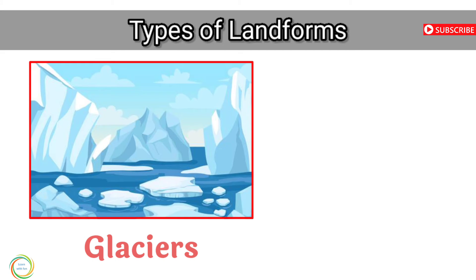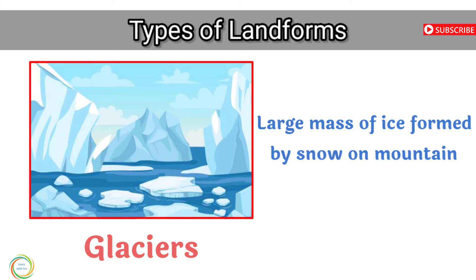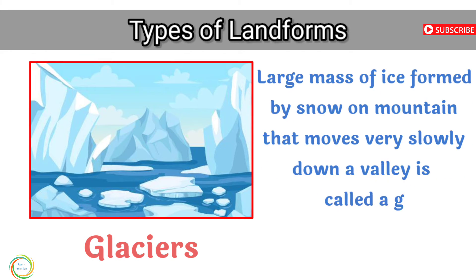Glacier: a large mass of ice formed by snow on mountains that moves very slowly down a valley is called a glacier.